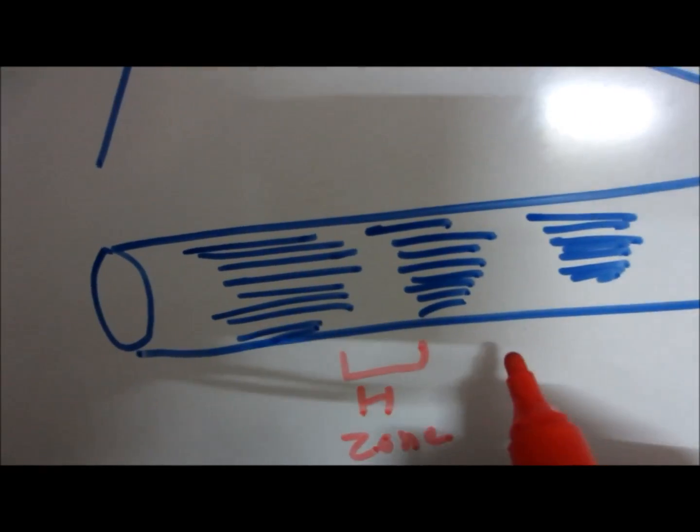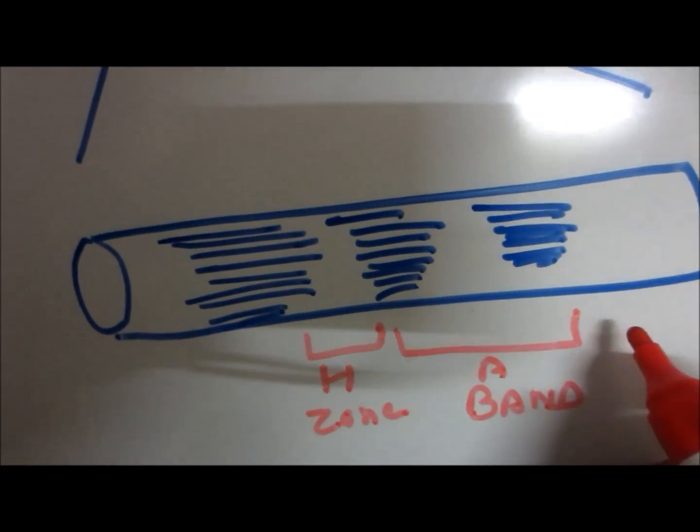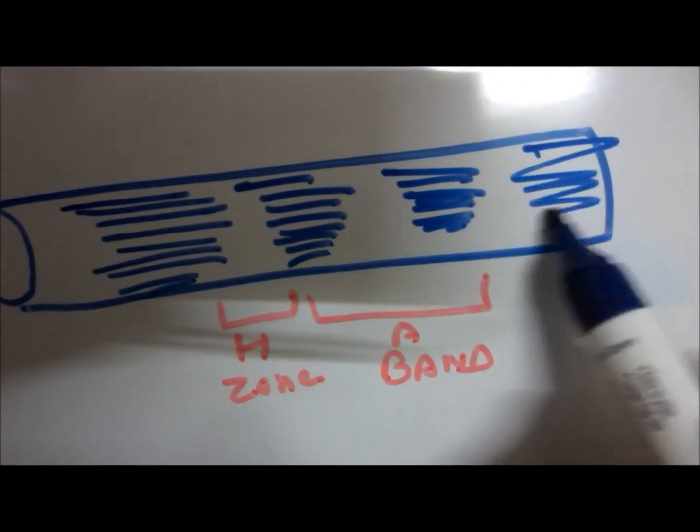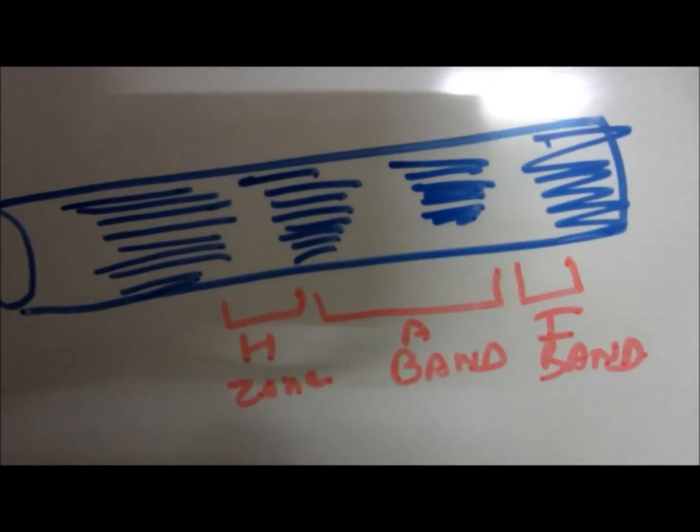The I band is further divided by a line known as Z line, which is also known as Krause's membrane or Dewey's line.